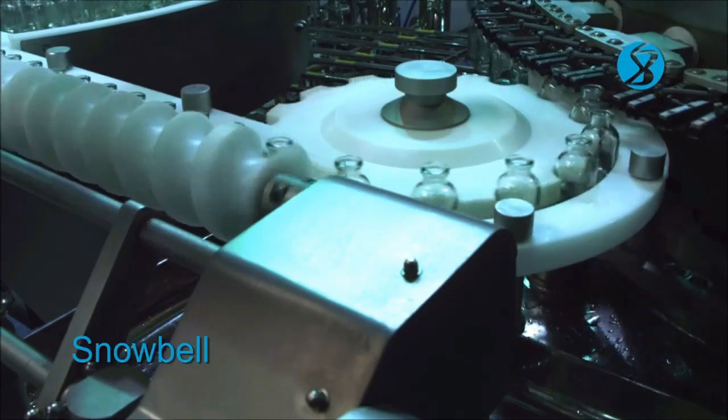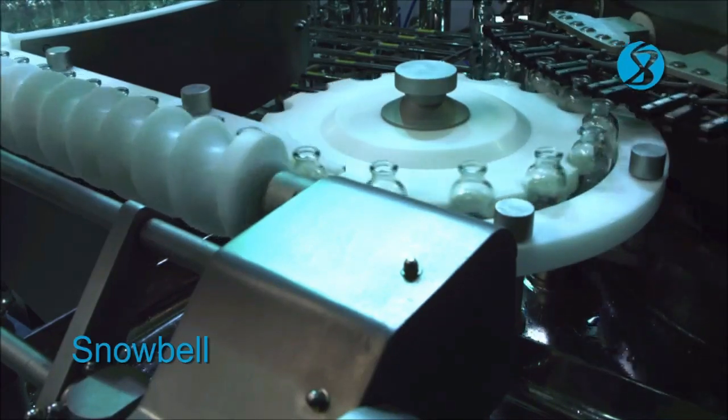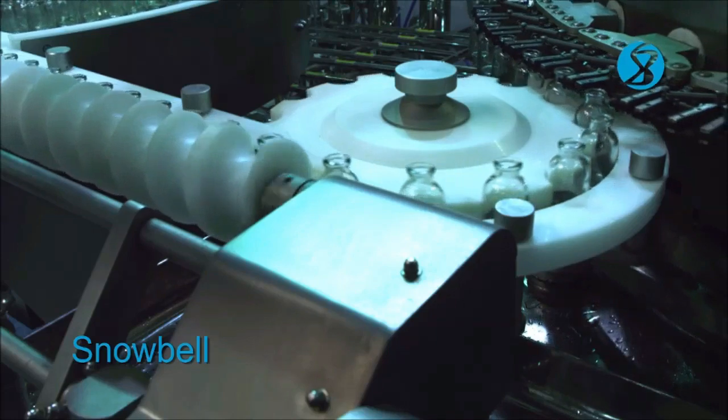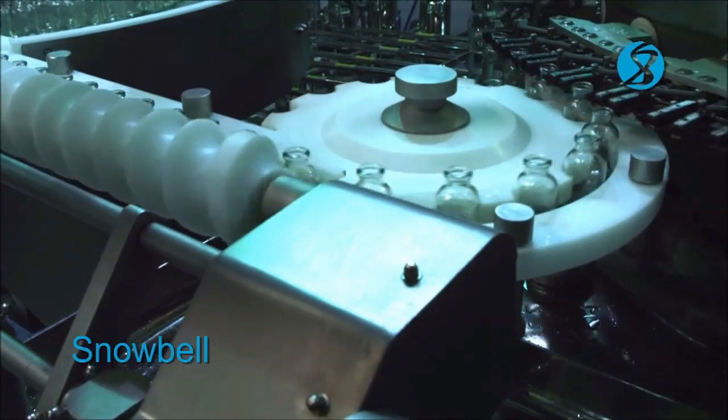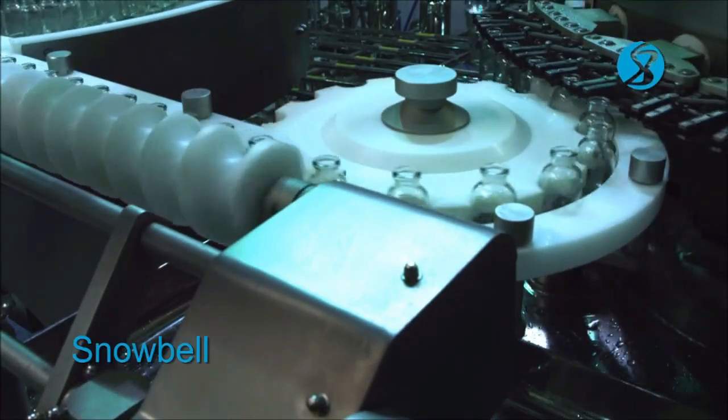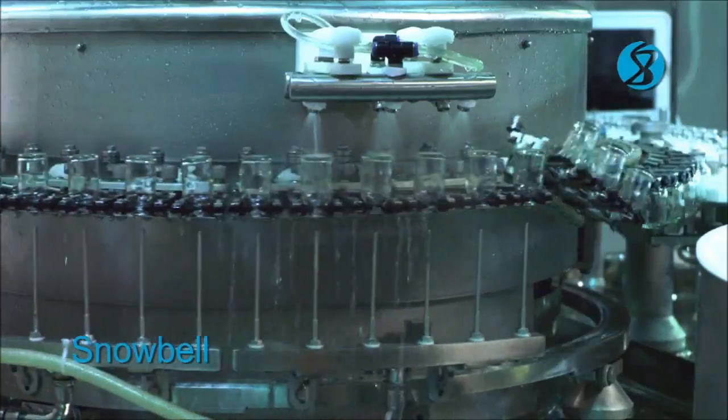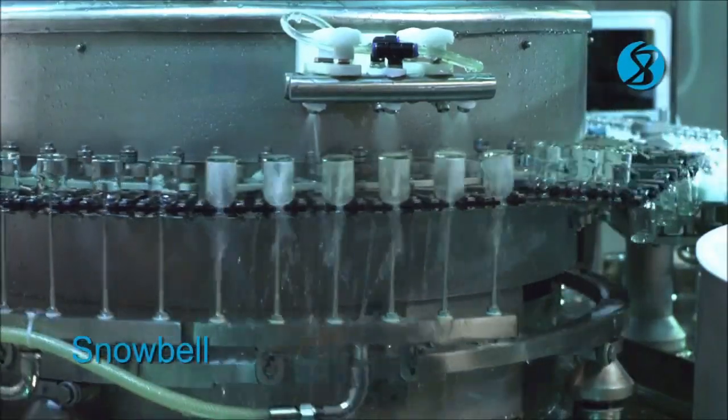Each vial is held by its neck. V-grippers rotate the vials by 180 degrees neck down. The vials are then passed through the cleaning stations upside down.